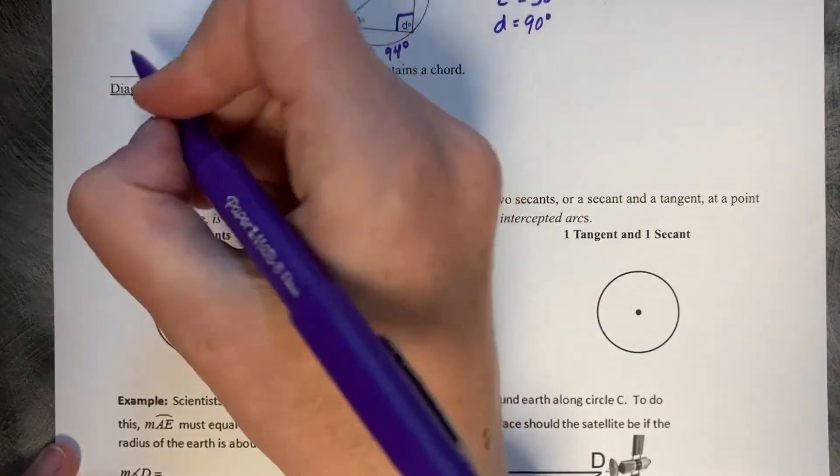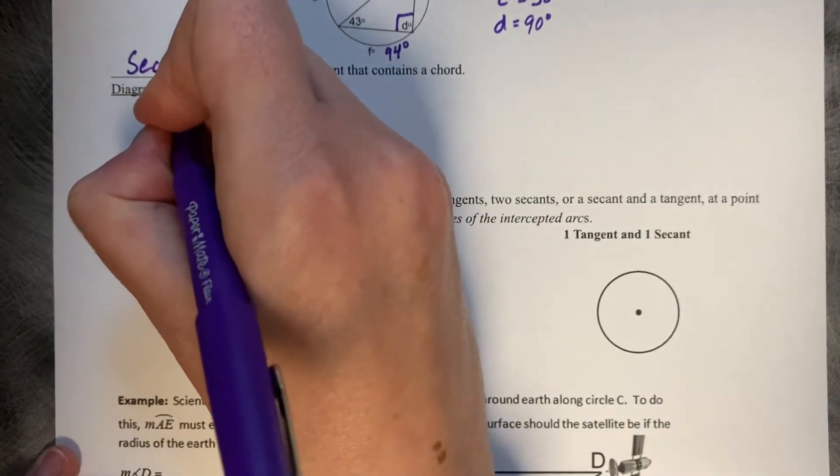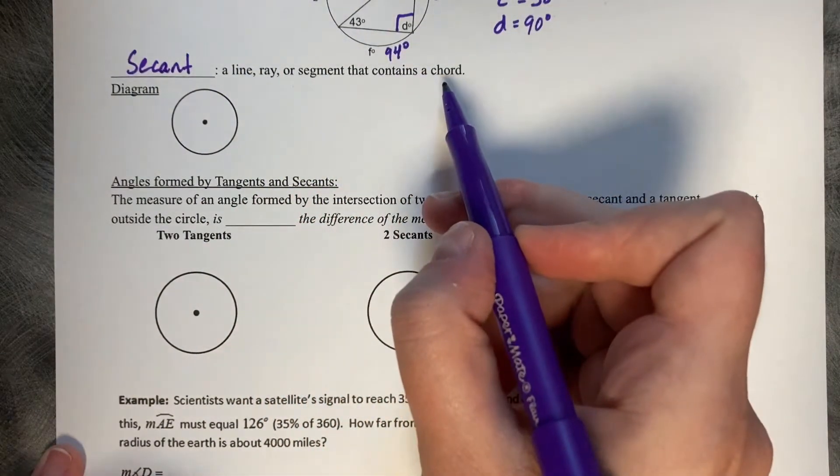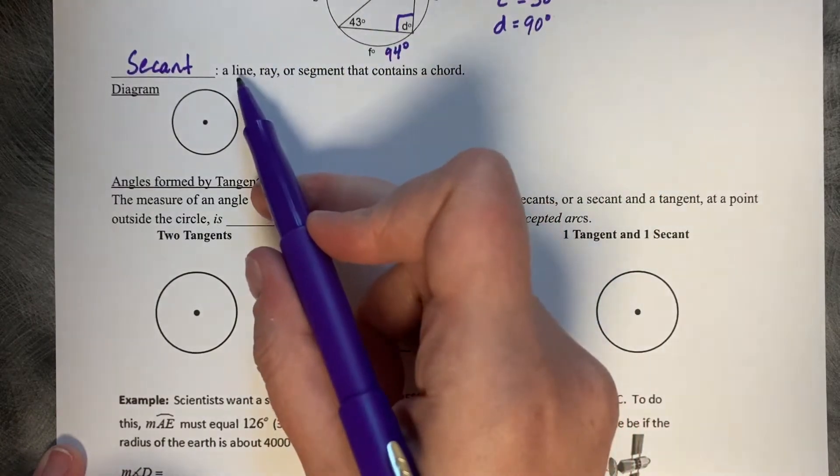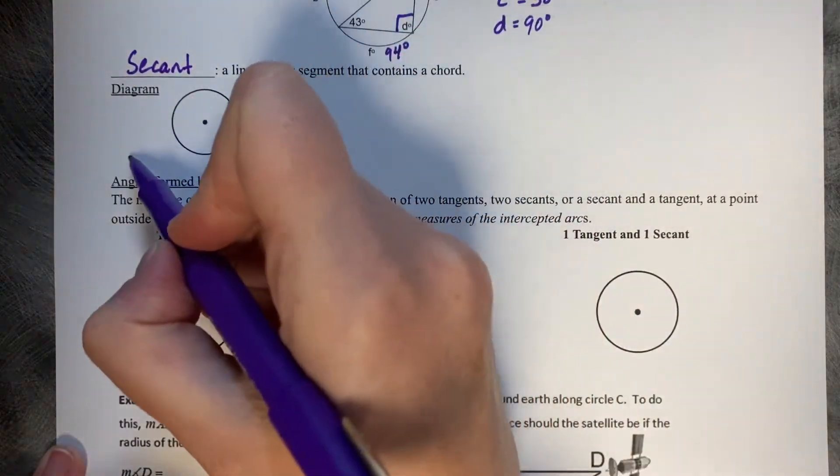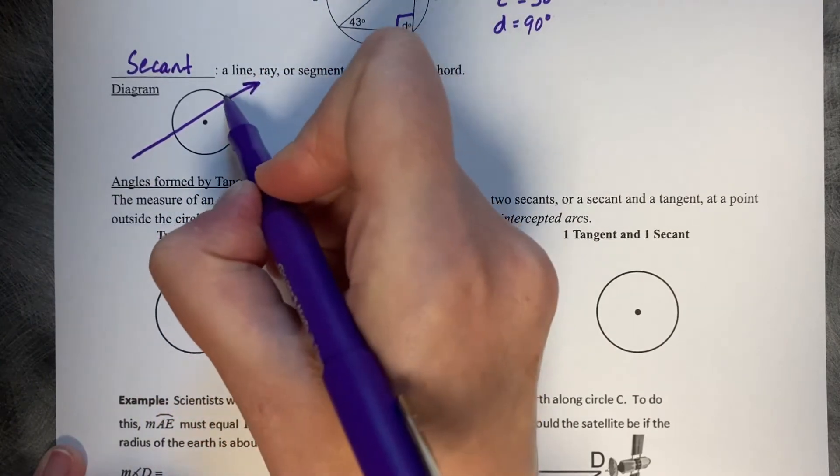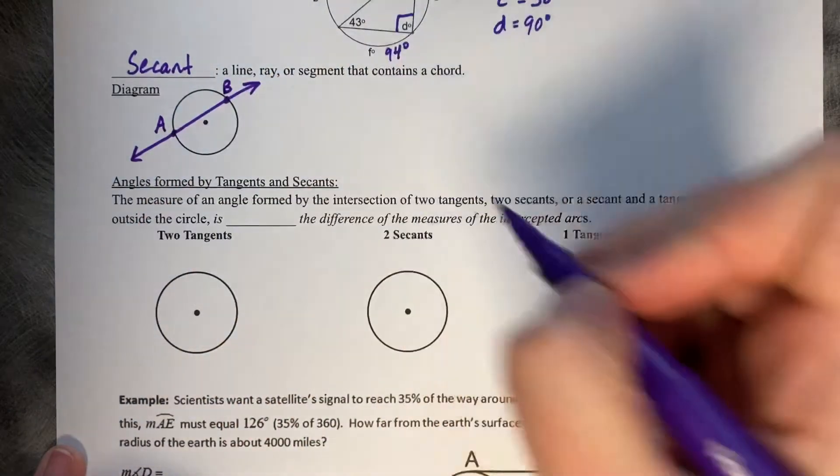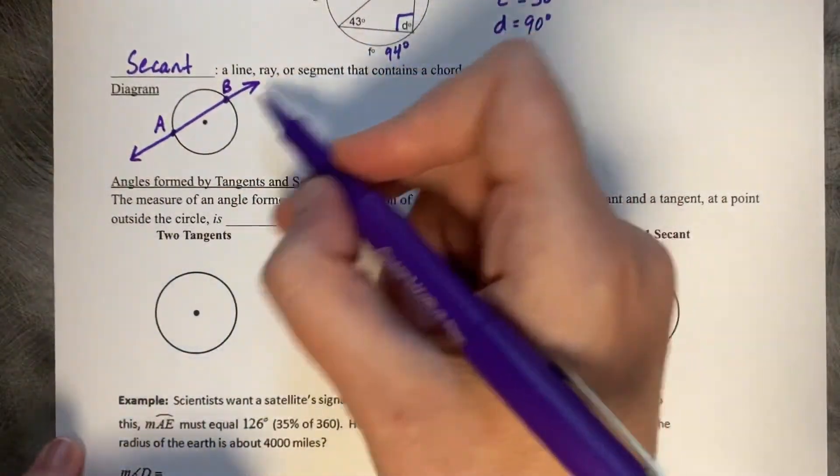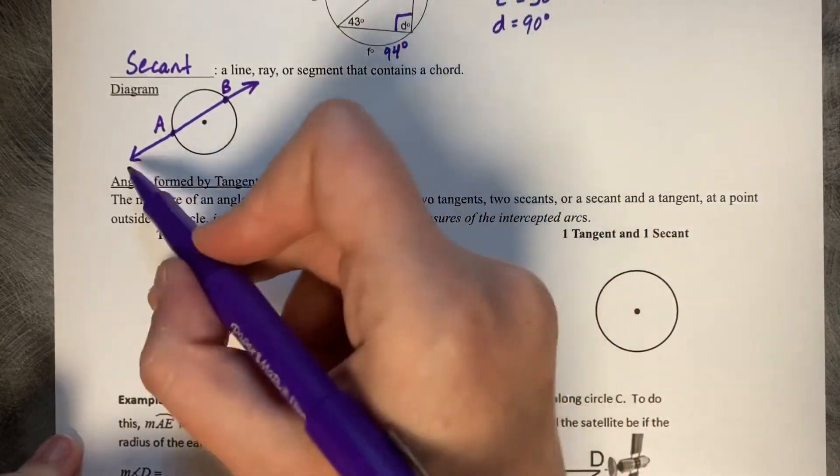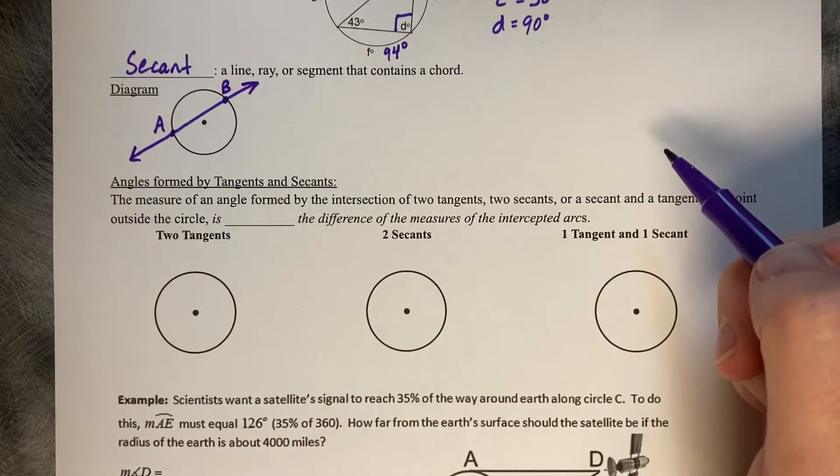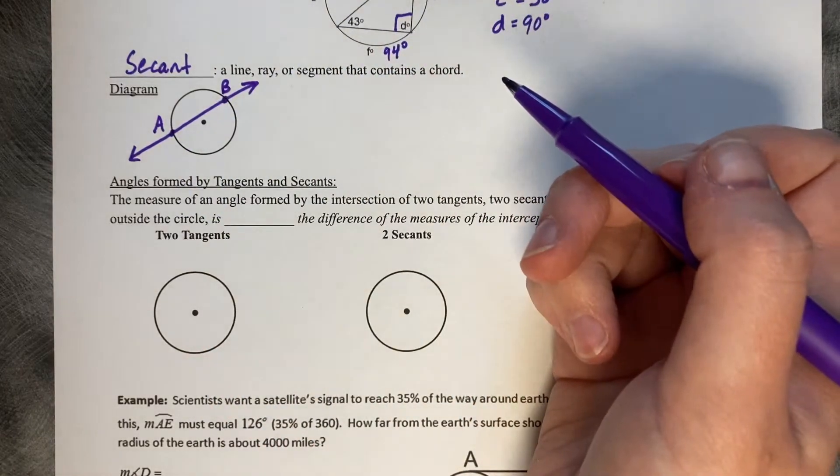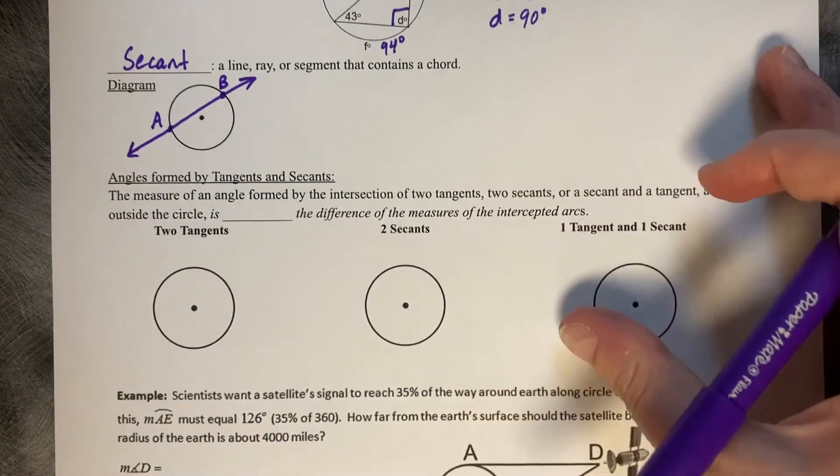Our first vocabulary word today is called a secant. A secant is a line, ray, or segment that contains a chord. Most often, it's going to be a line that goes all the way through the circle. That chord extends into a line, so this whole thing is called a secant. Very similar to a chord, it's got similar properties because it contains a chord. So, anything that applies to a chord is also going to apply to a secant.